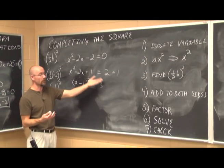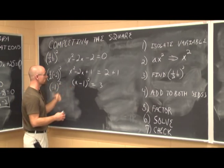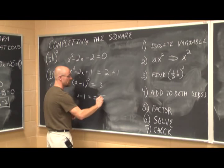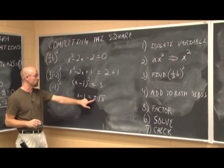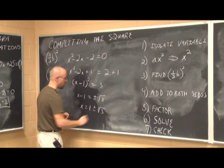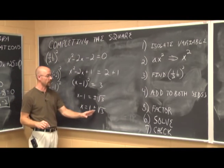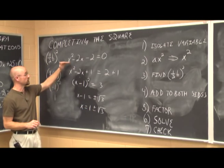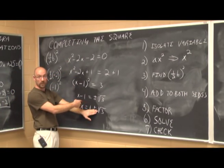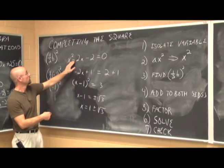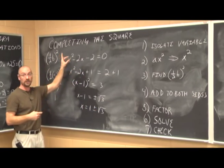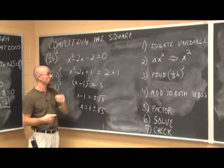Now that it's a perfect square equal to a number, we use the square root property. Taking the square root of both sides gives x minus 1 equals plus or minus the square root of 3. Adding 1 to both sides: x equals 1 plus or minus the square root of 5. We can check this in the original equation using FOIL and distribution, combining like terms, and we get 0 equals 0 — a true statement.